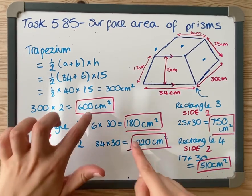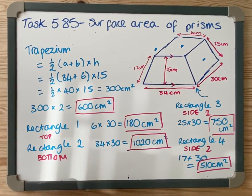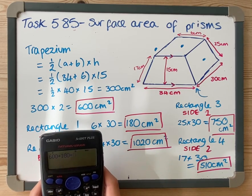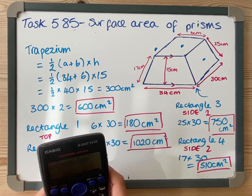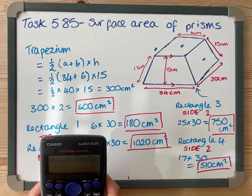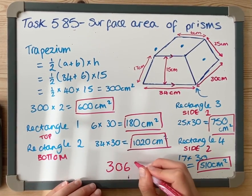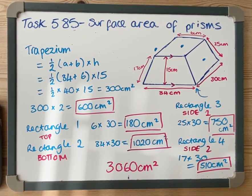Obviously, if I want the total surface area, I've got to add up all my parts in my boxes. So I've got 600, add 180, add 1,020, add 750, add 510, which is 3,060 centimeters squared.